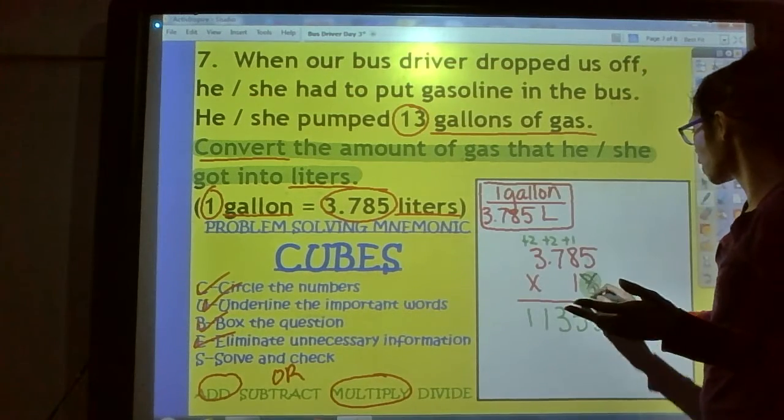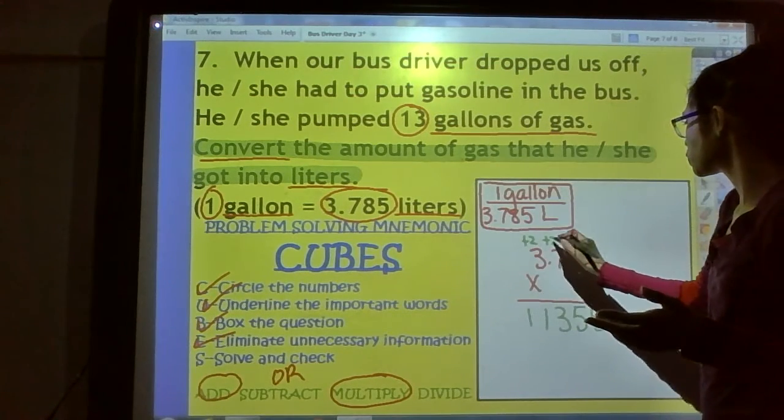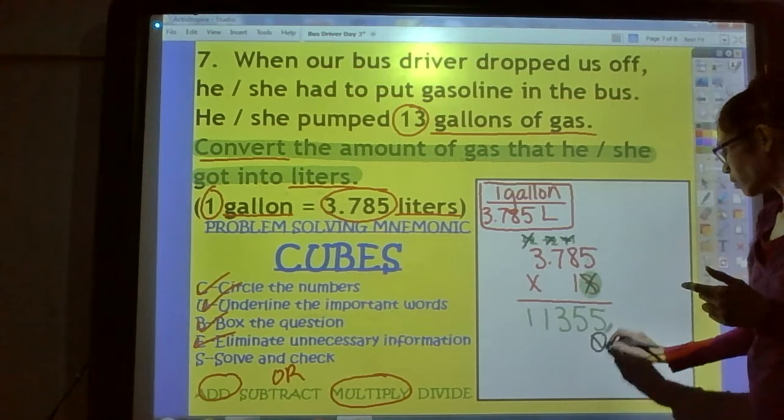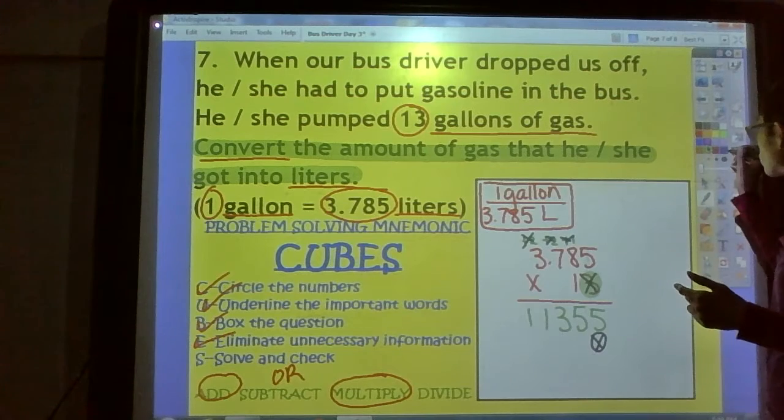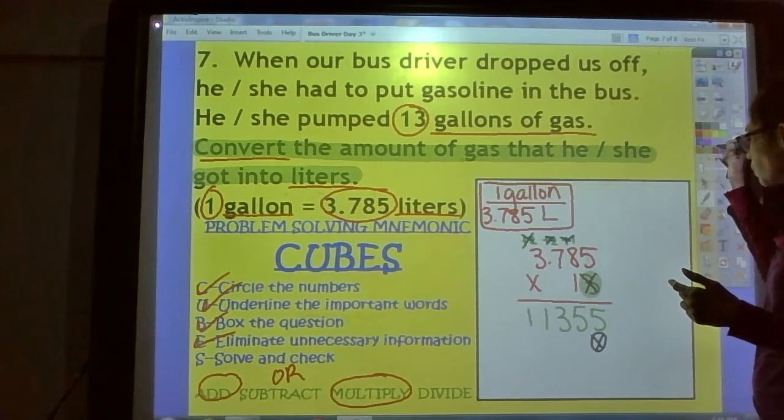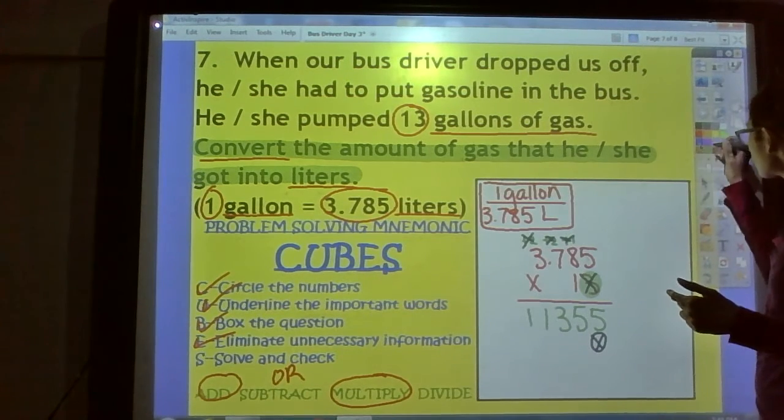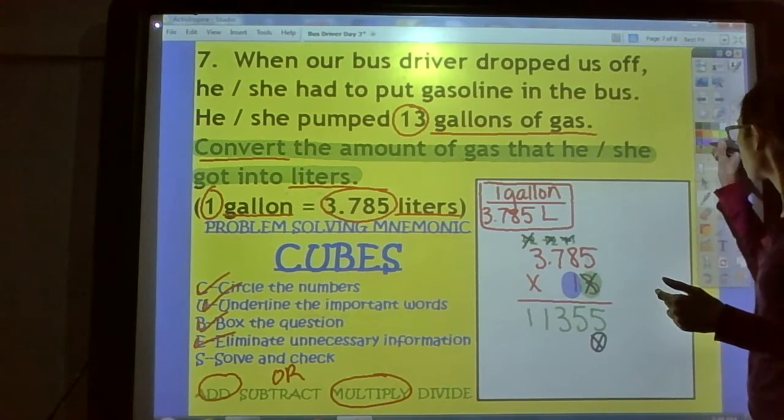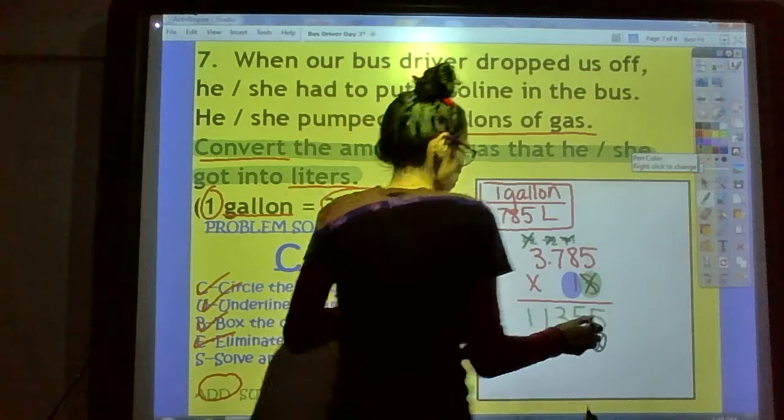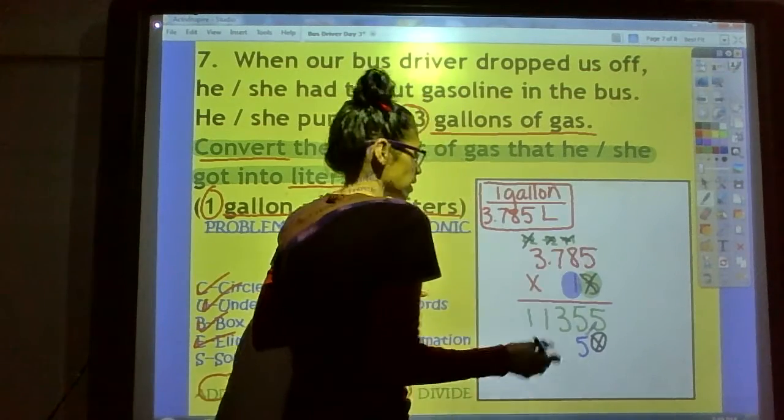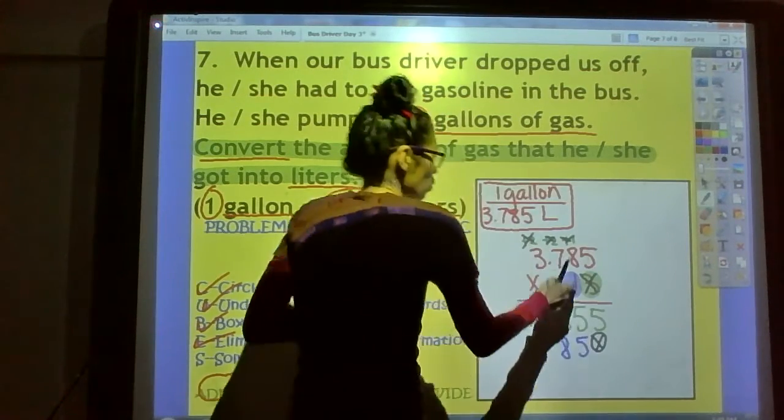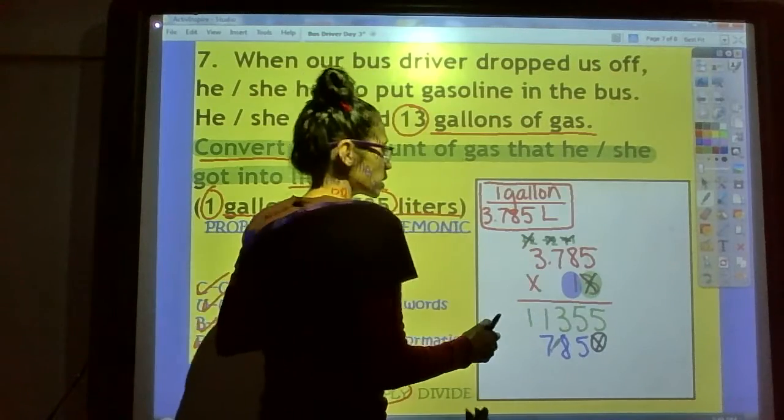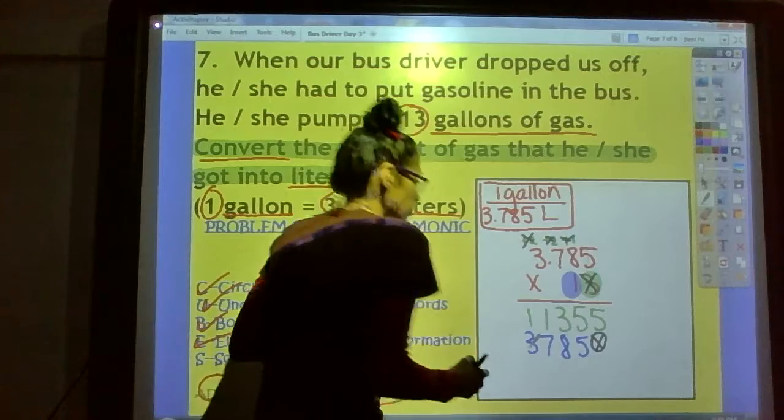I'm done with you, 3. And don't forget the placeholder. Zero placeholder. Next step, what do we need to do? We need to multiply that 1. Let's multiply that 1. 1 times 5 is 5. 1 times 8 is 8. 1 times 7 is 7. And 1 times 3 is 3.